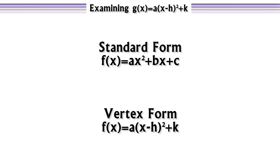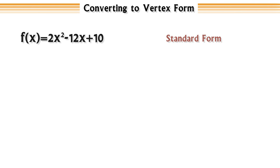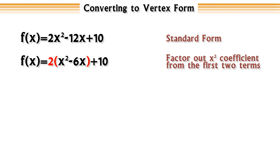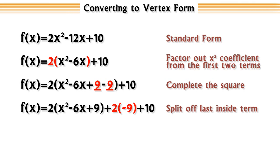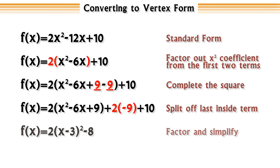This is great when we're asked to graph a quadratic function in vertex form, but what if our function is in standard form? It turns out that in a few quick steps, every quadratic function can be converted to vertex form. Given a quadratic function in standard form, we want to convert it to vertex form by a process called completing the square. First, we factor the coefficient of the x² term out of the first two terms. Next, we complete the square on the inside by adding and subtracting the value that completes the square. We find this value by taking the coefficient of the x term, dividing it by 2, then squaring it. Then we split the last inside term off so what's left on the inside is a perfect square trinomial. Finally, we factor our perfect square and simplify.